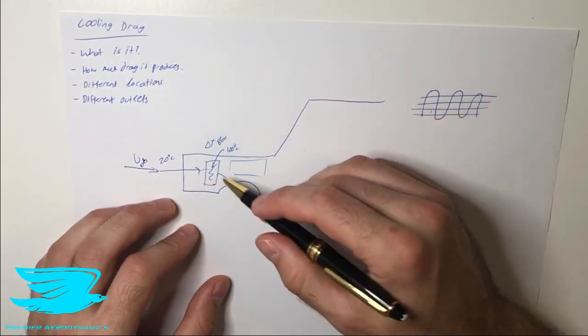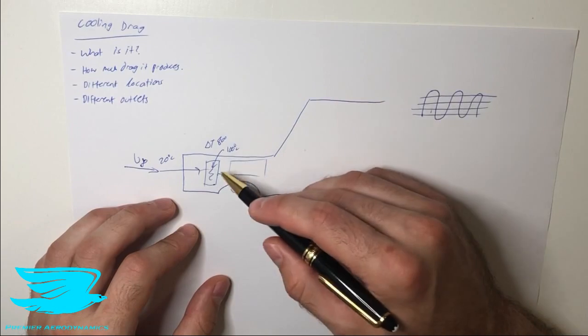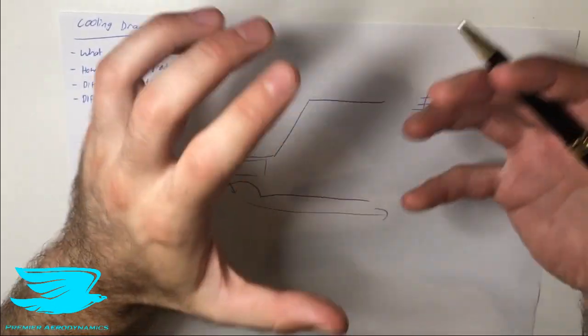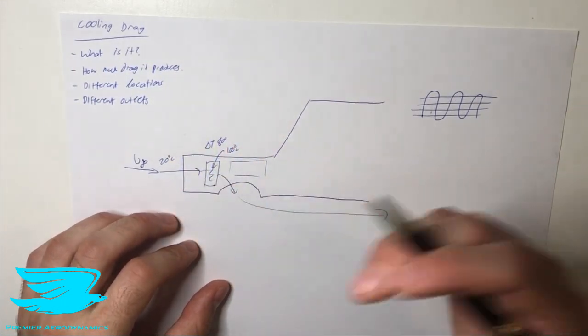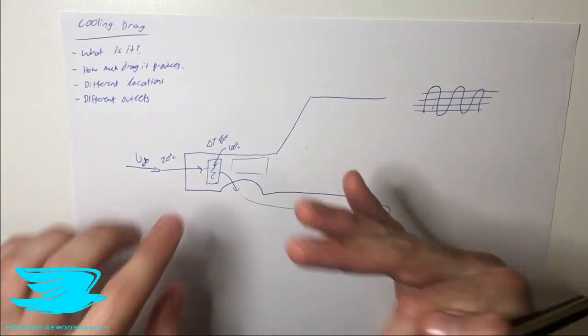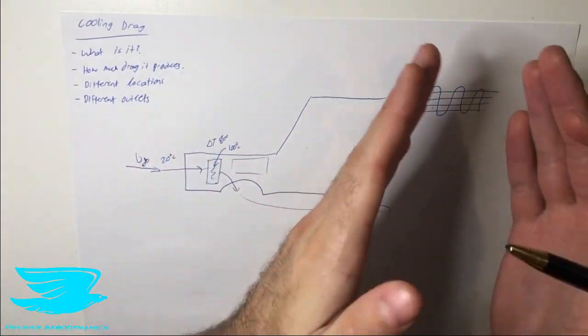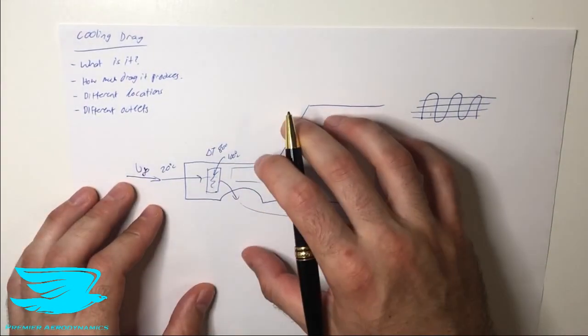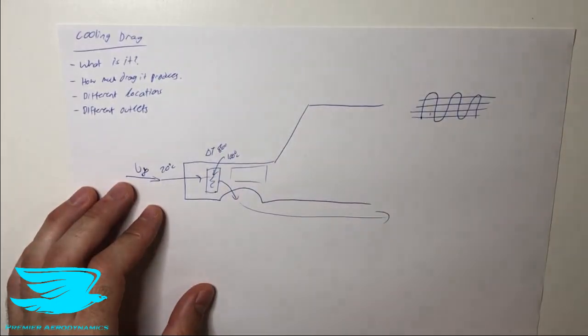Finally, we have the flow coming out of the back of the radiator. So this is the outlet. This outlet is often snaky a little bit, so the flow has to maneuver around before it can get out. This is also a part of drag. So we have three components: the inlet, the radiator itself, and the outlet. We also have where the flow comes out, and this also affects the drag of the radiator, as we'll cover in a second.